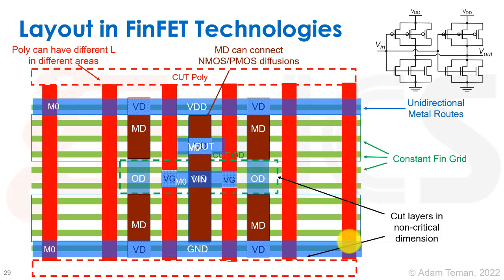Notice that we didn't even need to go up to metal one inside our standard cell. A lot of standard cells are built only with metal zero — they don't even need to go up to metal one. I hope that showed you a bit of the layout you'll run into in FinFET. It's very different from planar technologies and confusing, but I hope that gave you an explanation of how this type of work is done.